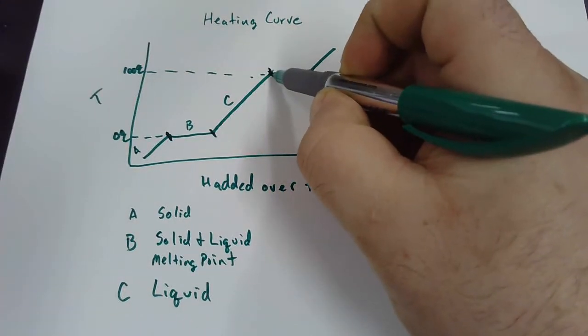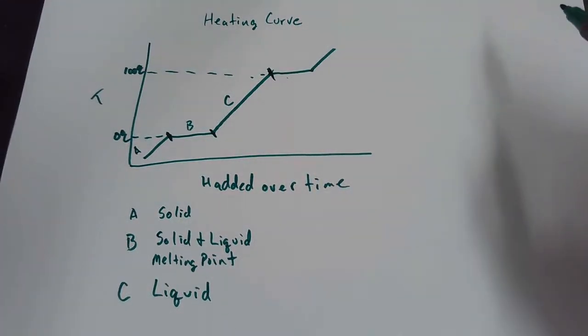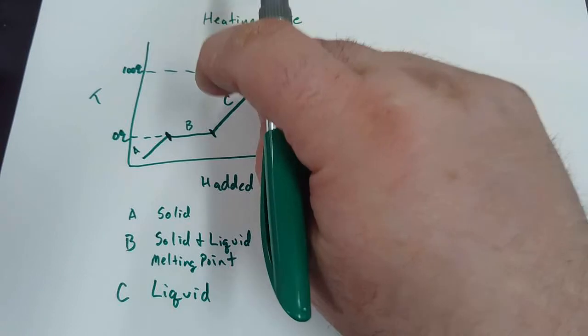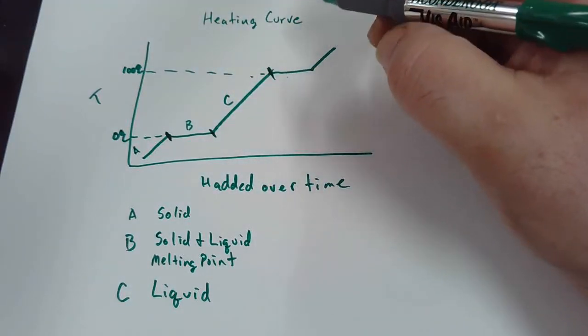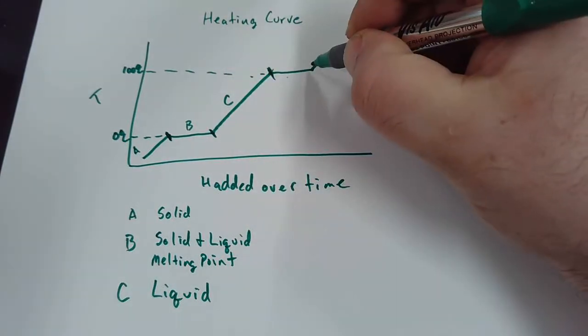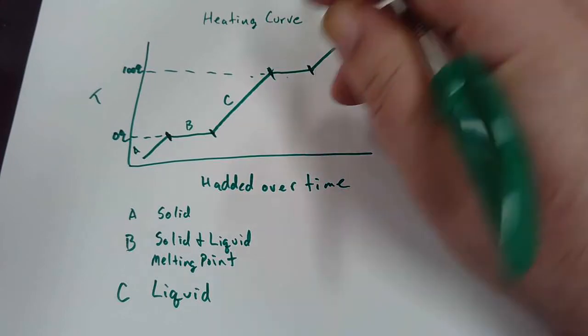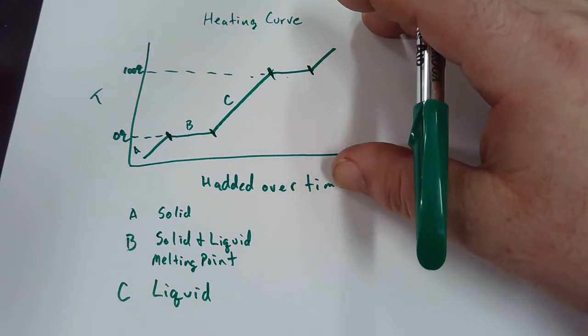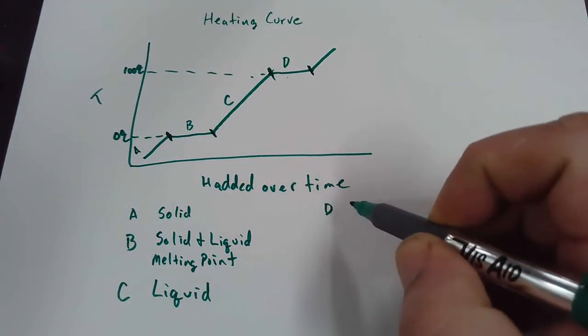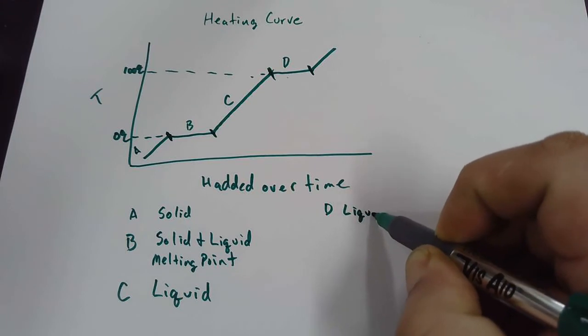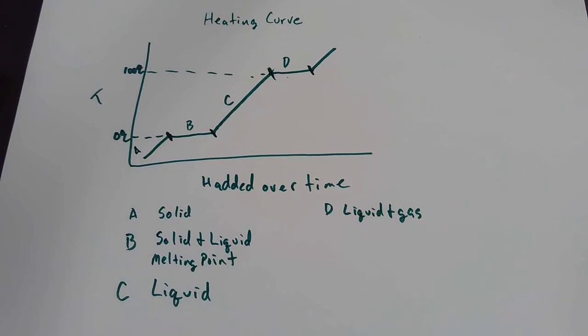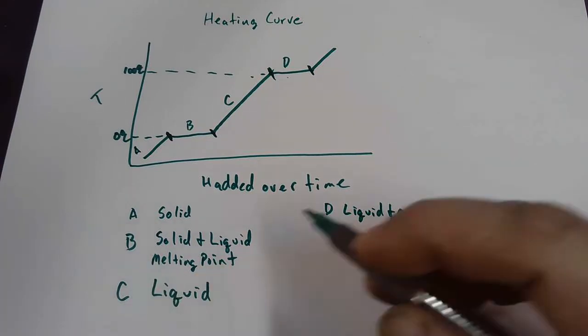Then I get to this segment here. What phase or phases are present at that point? At the beginning of this segment it's only going to be a liquid. At the end of the segment, it'll all be a gas. So what phase or phases will be present in segment D? This will be liquid and gas. What do we call the point where water becomes a gas? This is our boiling point.